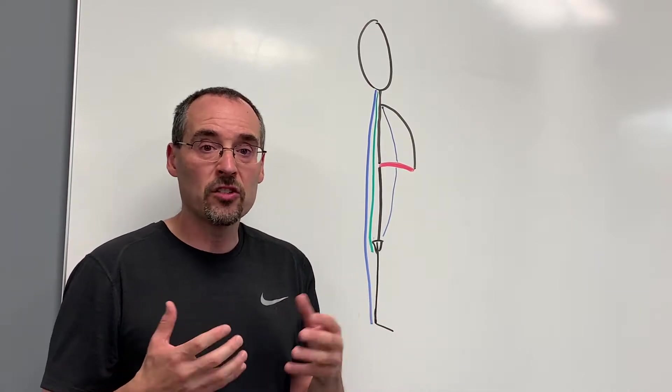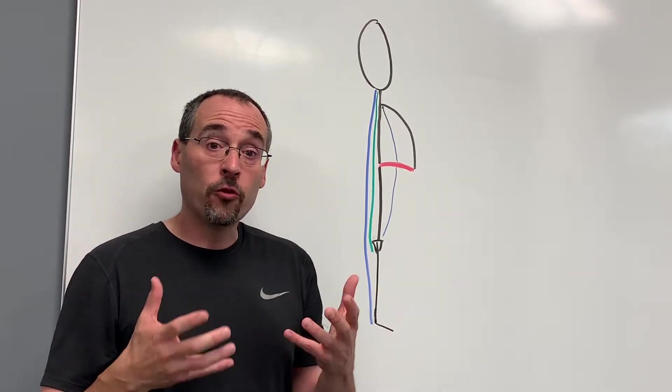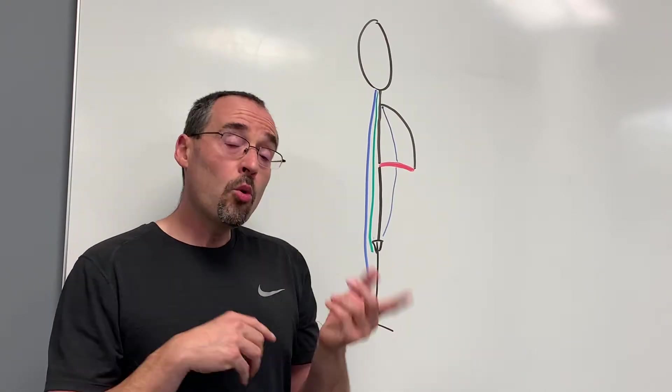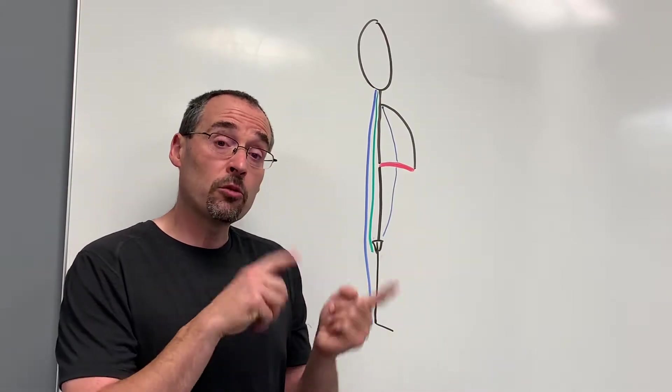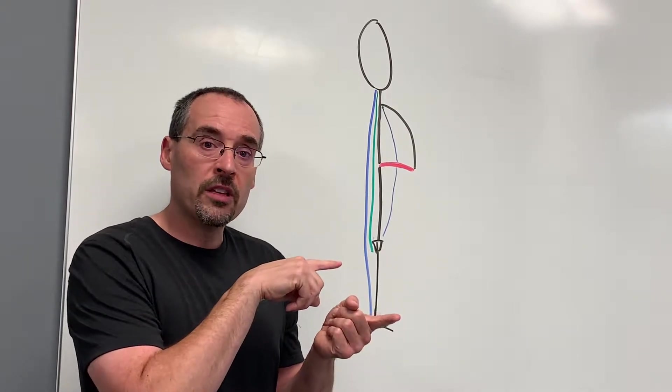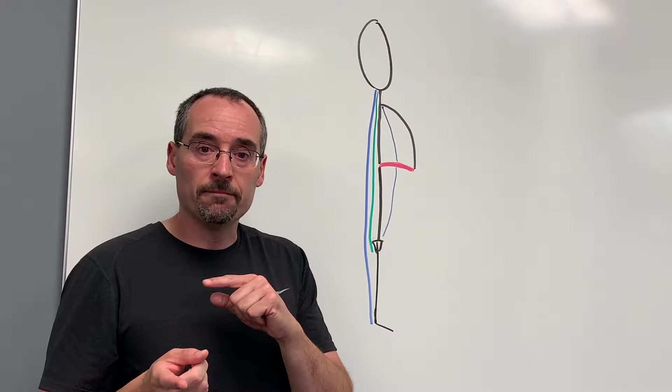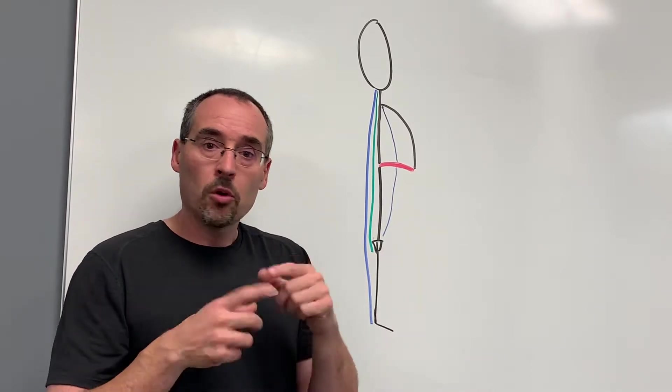It's not going to be as efficient as it was before the injury or before the problem began, but it's going to do its best. Or it might start to adapt and recruit another of these kinetic chain lines to compensate for the one that's not working well. Or it could be doing both.